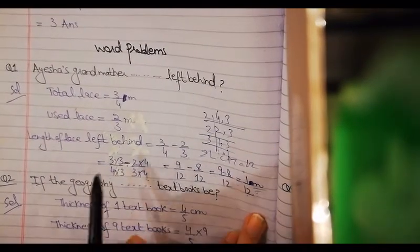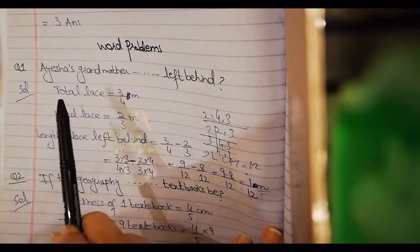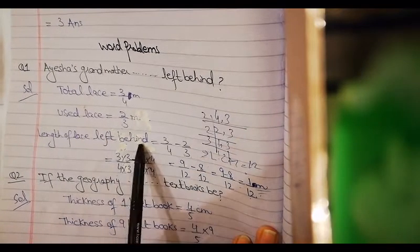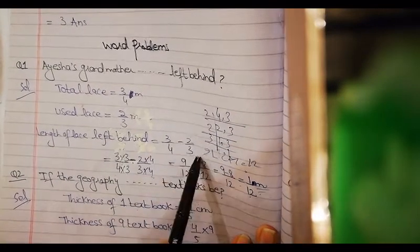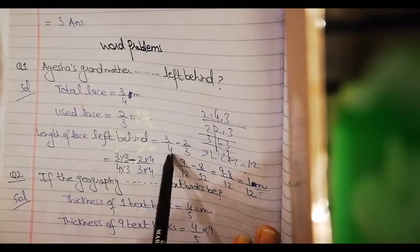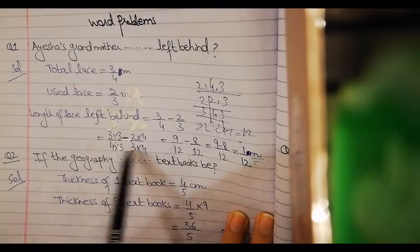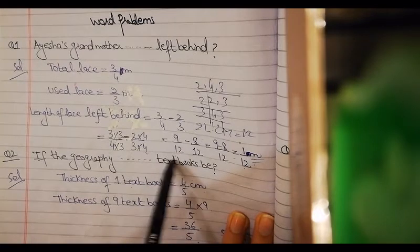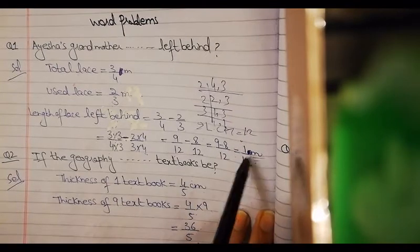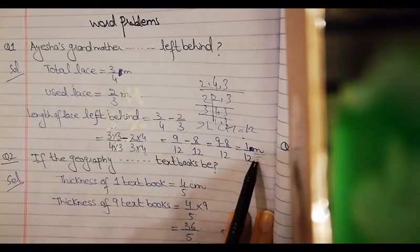Look at here. Total glass given is 3/4 meter, used is 2/3 meter, length of glass left behind. Simply, I subtracted both values. This was the total value and used is 2/3. 3/4 minus 2/3. LCM is equal to 12. I made both denominators equal to 12. Denominators are equal, the numerators I minus. After subtraction, my answer is 1/12 meters. Obviously, if you have values given in meters, then your answer will also be in meters.